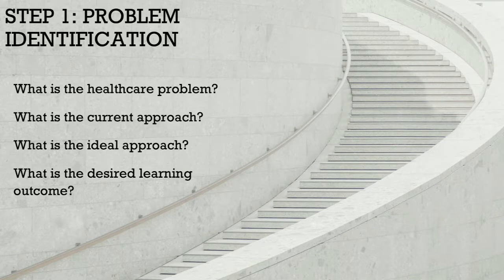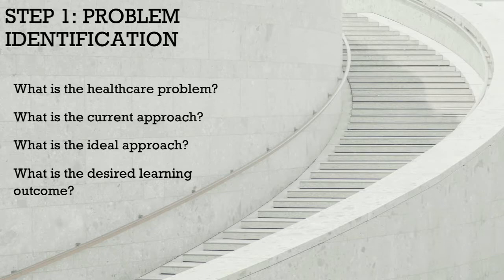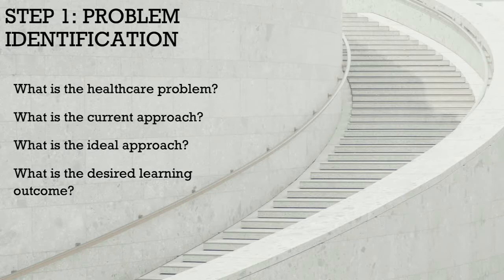Step one is problem identification. Kern's likes a big 10,000-foot view — what is the problem in society that you need to fix with your educational initiative? For example, we developed a new stroke curriculum for our residents. Our 10,000-foot view was: strokes are bad, we should treat strokes, our residents should know how to do that. From there you whittle it down — emergency physicians should be competent to treat strokes independently. But our current approach: we're a comprehensive stroke center, so our neurology residents and stroke teams do a lot of the actual stroke treatment, meaning our residents don't get education in managing TPA, making that decision, or counseling.